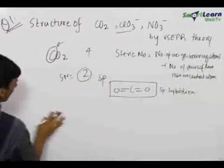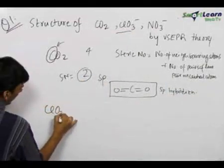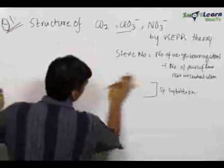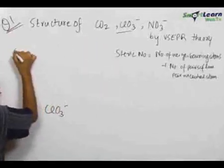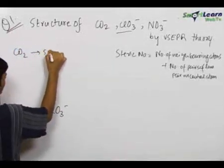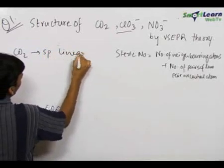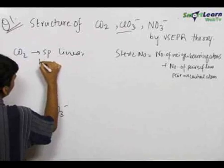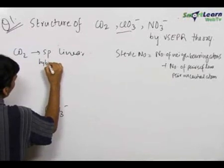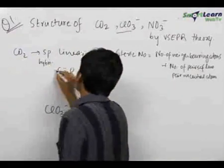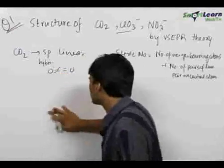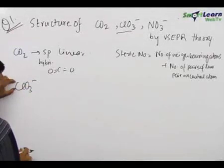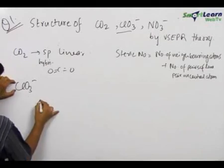Similarly, let us deal with ClO3⁻. To summarize CO2: it has SP hybridization and is linear. Now for ClO3⁻, we know that the number of electrons in the outermost shell of chlorine is 7.